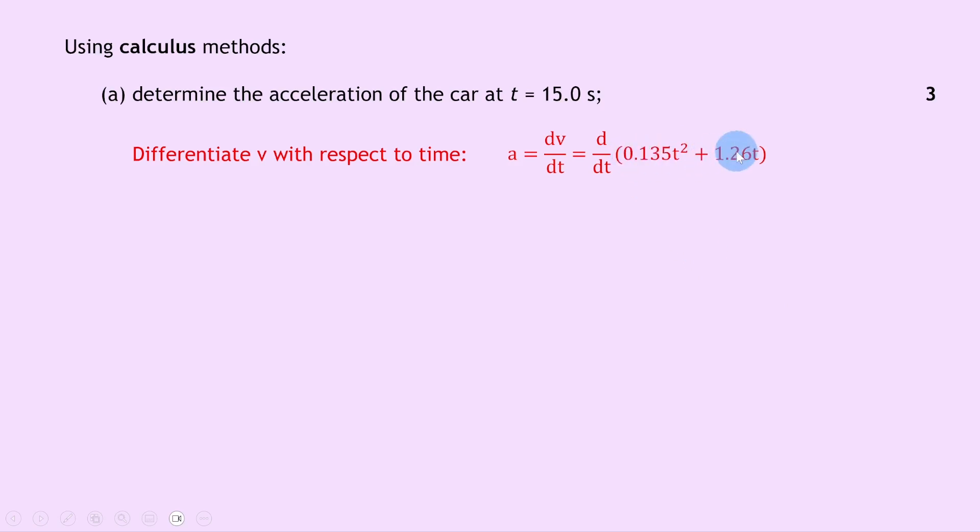To differentiate, we bring the power down and multiply it by the front, then take away 1 from the power. So that means we have 2 times 0.135 times t plus 1.26. We can simplify that to 0.27t plus 1.26.